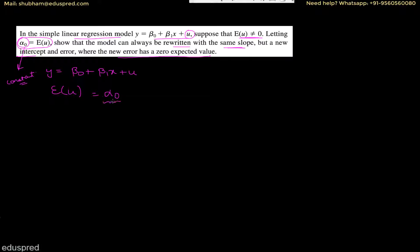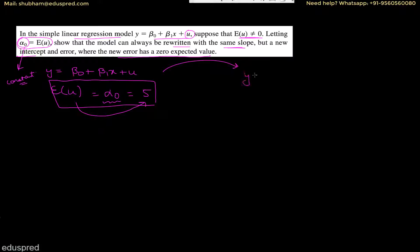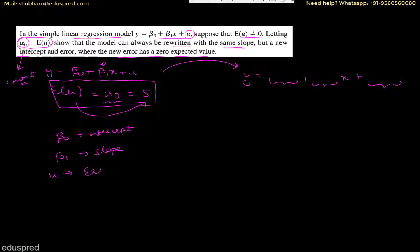This alpha zero is either way a particular number, so I'm using the number five. We are given that the expected value of u is equal to five. Now we have to show that we can rewrite this model with the same slope — so beta one is not changing — but a new intercept and a new error. Beta zero is the intercept, beta one is the slope, and u is the error term.